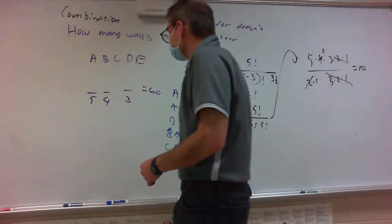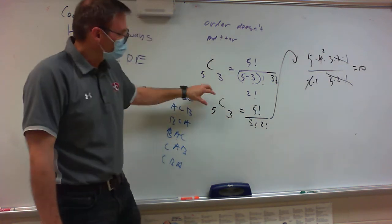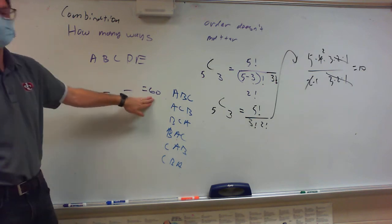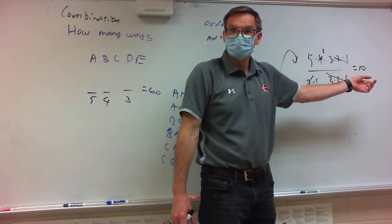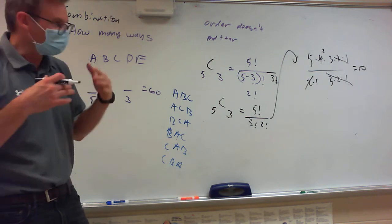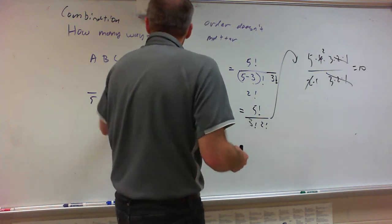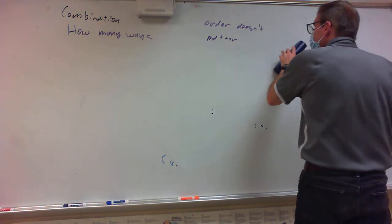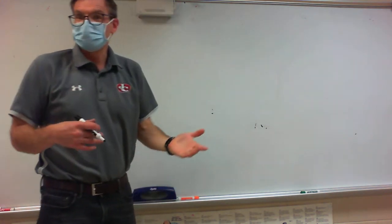So the difference is: if order mattered, we got 60 different choices. In this one, when order doesn't matter, we only have 10 different things. Now I want to talk about how you say certain things, and here is my classic example of comparing the differences between when order matters and when order doesn't matter.